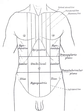The plane in most cases cuts through the pylorus of the stomach, the tips of the ninth costal cartilages, and the lower border of the first lumbar vertebra.